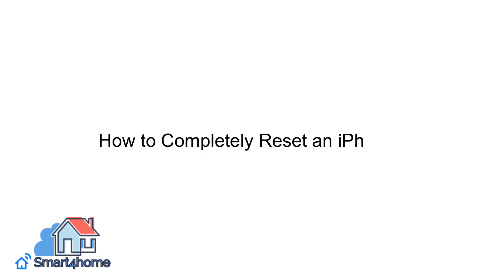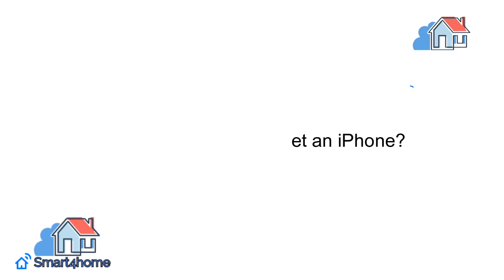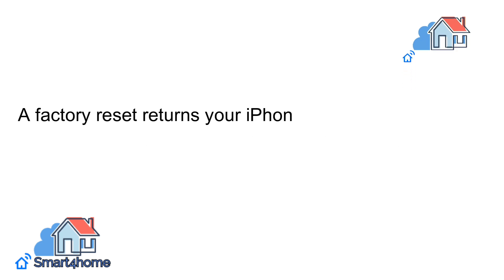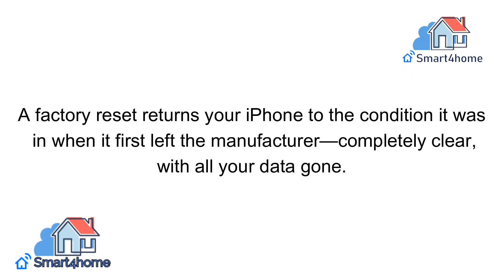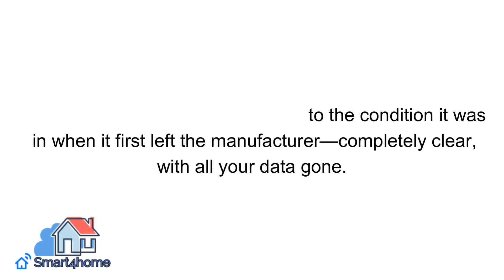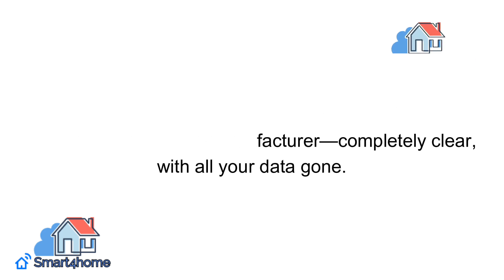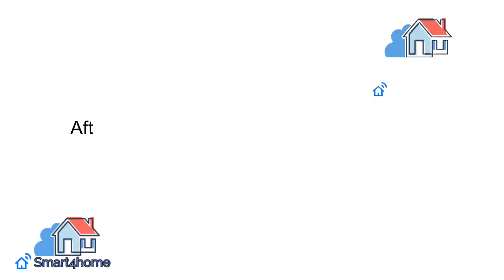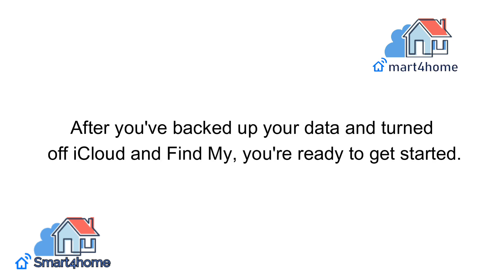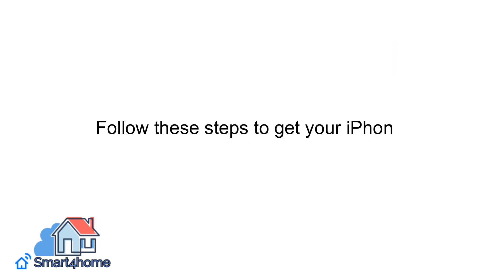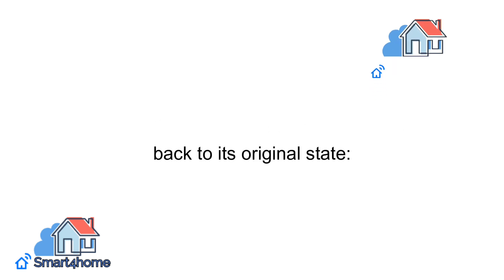How to completely reset an iPhone. A factory reset returns your iPhone to the condition it was in when it first left the manufacturer — completely clear, with all your data gone. After you've backed up your data and turned off iCloud and Find My, you're ready to get started. Follow these steps to get your iPhone back to its original state.